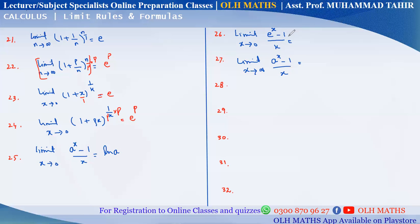For (e^x − 1)/x, the answer is natural log of e. Since the base of natural log is e, and the base and number are the same, the answer is 1. But if x approaches infinity for (a^x − 1)/x, then the answer is infinity.